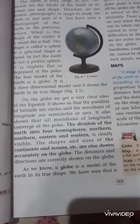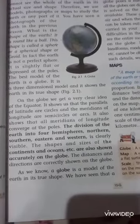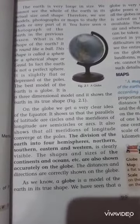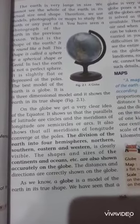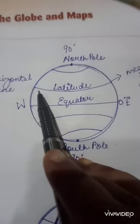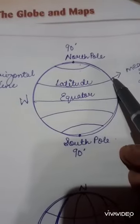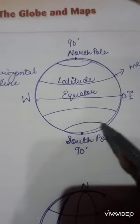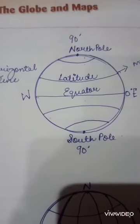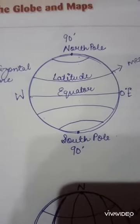The distances and directions are correctly shown on the globe. Now let us see where longitude and latitude are on the globe. The horizontal lines on the globe tell us about the latitude.